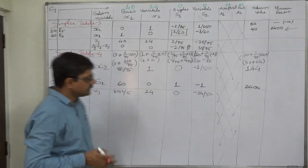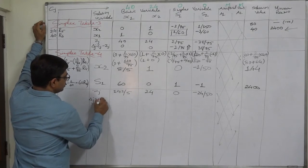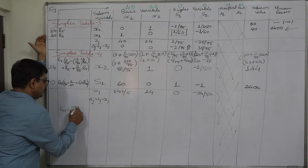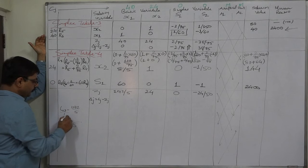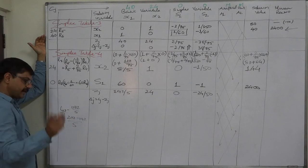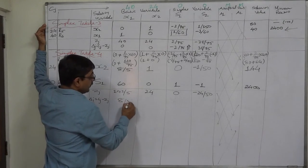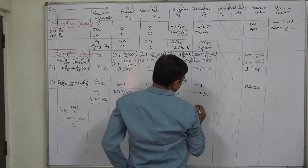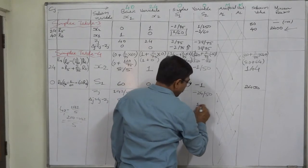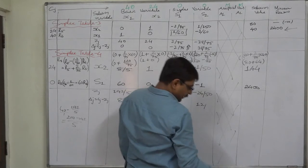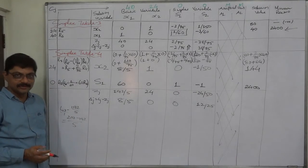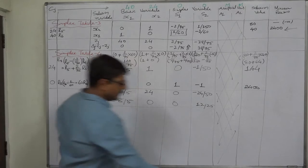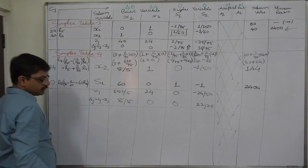We are not going to write anything further here — we still get the optimal solution. Now for the delta J values, that is C J minus Z J: 40 minus 192/5, taking 5 as LCM gives 200 minus 192, which is 8/5, positive. 24 minus 24 is 0. 0 minus 0 is 0. 0 minus (minus 24/50) gives positive 24/50 or 12/25. We have all delta values 0 or positive, so we have arrived at the optimal solution for the minimization problem.